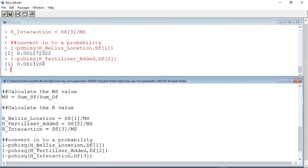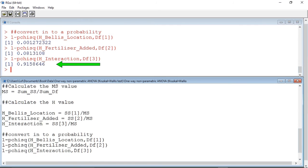Finally, we can look at interaction. The p-value is equal to 0.9. This result is strongly arguing that there is no interaction between location and fertilizer.